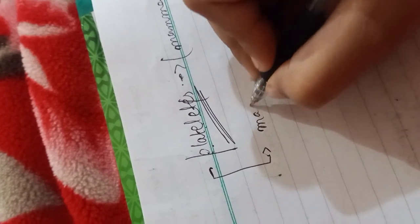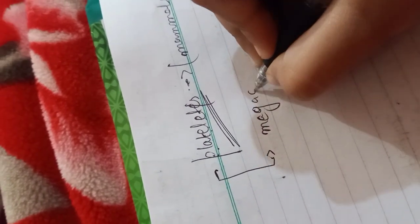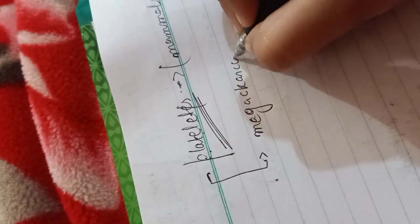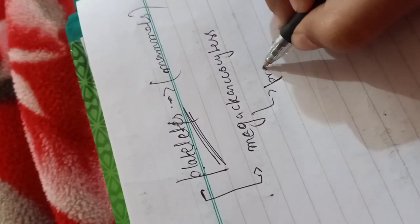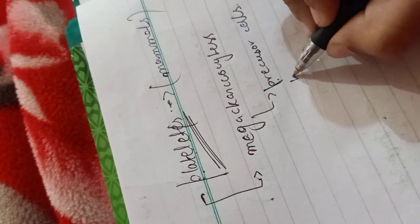We have megakaryocyte cells. These are basically precursor cells formed in bone marrow.